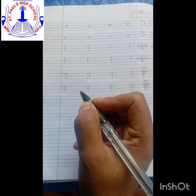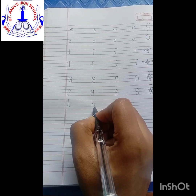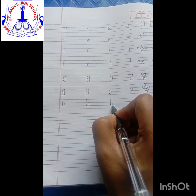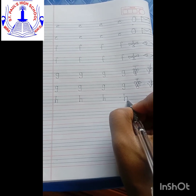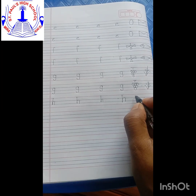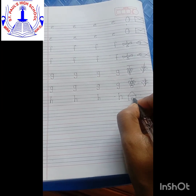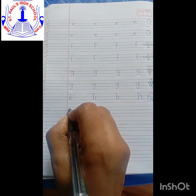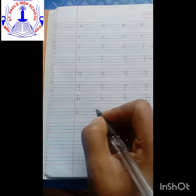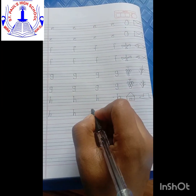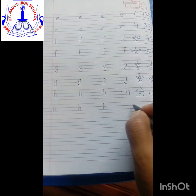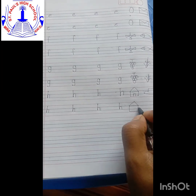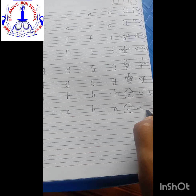Now we are going to write H: standing line and a jumping line. H says 'h': hut, hat. Once again: standing line and a jumping line. H says 'h': hut, hat.